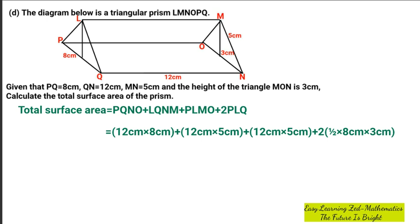Then once we've done that, we're going to find the product of this. So 12 times 8 will give us 96. 12 times 5 will give us 60. 12 times 5 will give us 60.